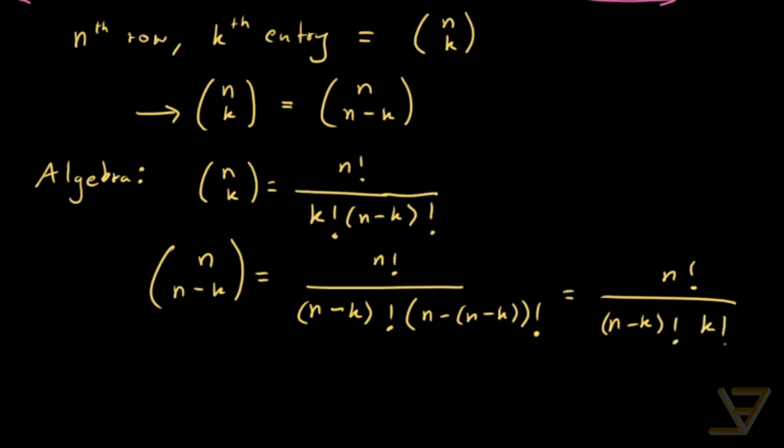And we have k factorial here after simplifying. So this and this, they are equal. So that algebraically proves the identity.